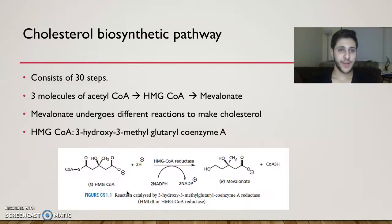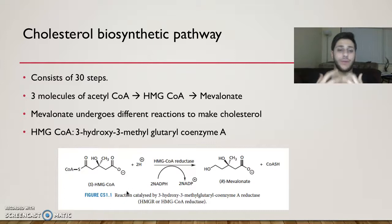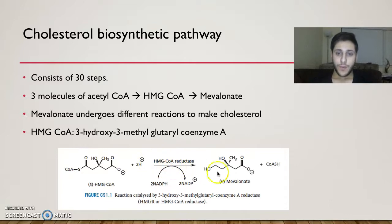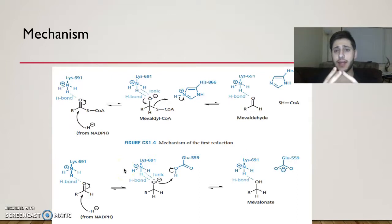The cholesterol biosynthetic pathway consists of 30 steps. The most important part is in the first two steps: three molecules of acetyl-CoA come together to make HMG-CoA, or 3-hydroxy-3-methylglutaryl-coenzyme A. This then gets catalyzed by an enzyme called HMG-CoA reductase. The reduction of HMG-CoA is catalyzed by this enzyme to make mevalonate, with the CoA part released as a leaving group. Within the enzyme, amino acid residues serve to stabilize the HMG-CoA and participate in the mechanism.